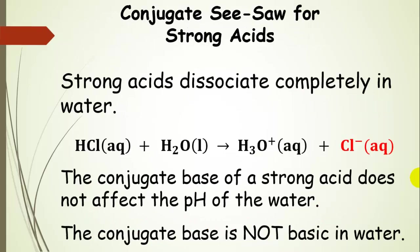Let's take it to extremes. Strong acids dissociate completely in water — this is as strong an acid as you can get in water. Hydrochloric acid is one of those; it dissociates completely. In the extreme, this is as strong an acid as you can get, which means its conjugate base — chloride anion — is as weak a base as you can get. Chloride anion does not act as a base in water, which is why adding sodium chloride to your cooking water doesn't change the pH — chloride is not changing the pH at all.